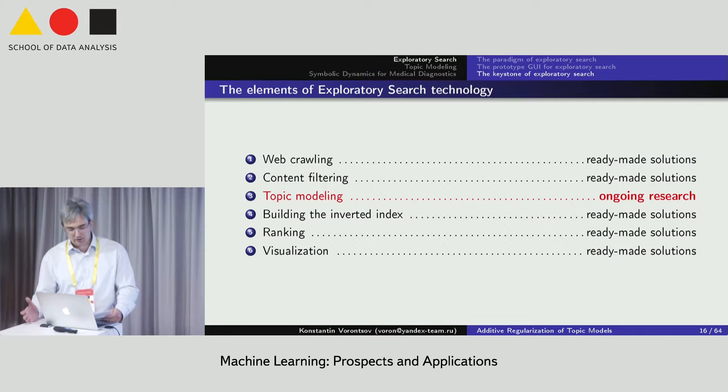Almost all technologies are ready now to assemble the exploratory search engine. This is web crawling, content filtering, inverted indexing, ranking and visualization. In particular, we can use any existing inverted indexing engine with only difference that we search documents by their topics instead of search documents by their words. The keystone technology for the exploratory search is topic modeling.